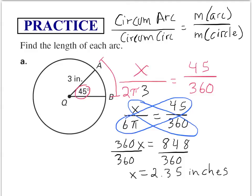To recap: we found the circumference of the circle, set up the proportion to find the arc length, used the arc measure of 45 degrees over 360 degrees, plugged in and cross-multiplied to get 360x = 848. We calculated 6π on the calculator, then divided both sides by 360 to get x = 2.35 inches.